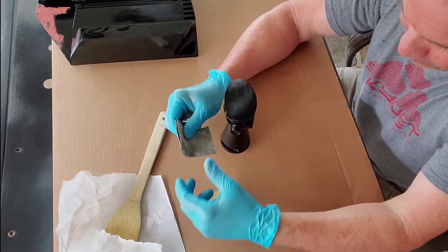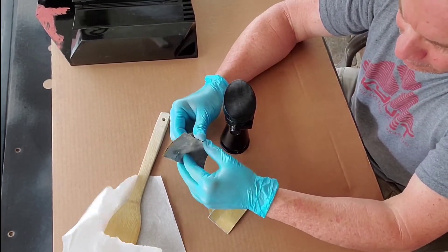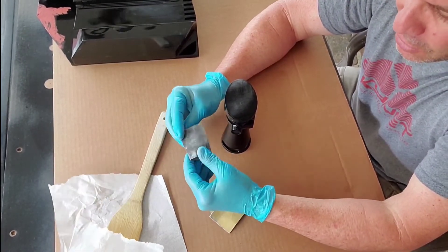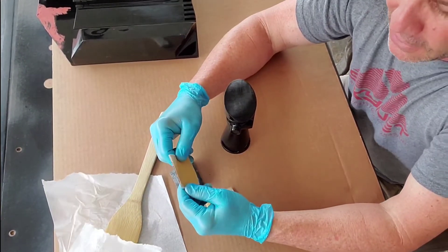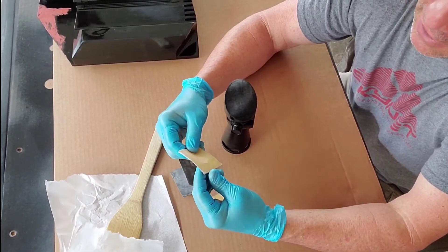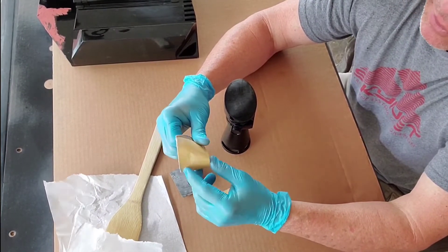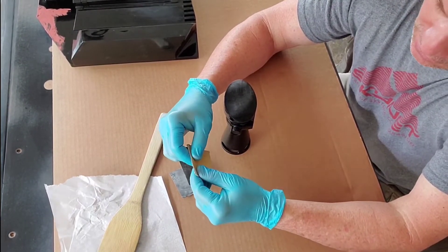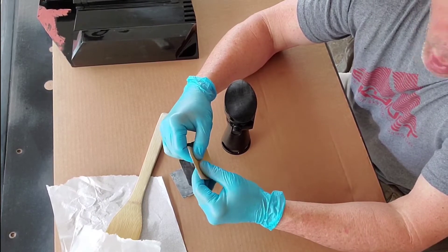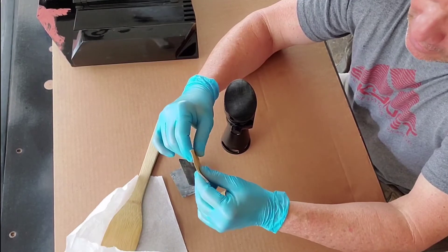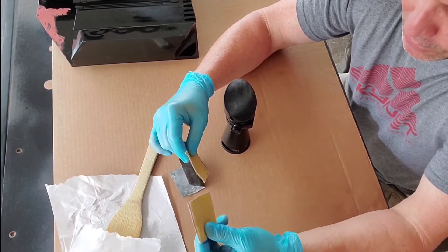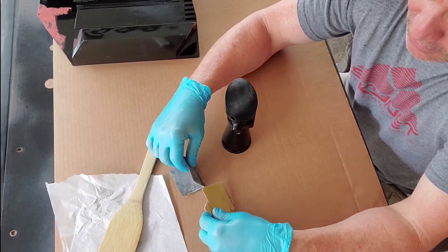First you're going to need some sandpaper guys. Different levels of abrasiveness. You're going to start off with something like a 320, something like that, and make sure it's fine sandpaper, not too grainy or too coarse. So 320 fine sandpaper. You can even get away with a 220 as long as it's fine.